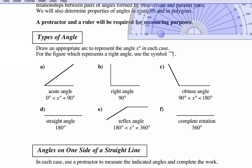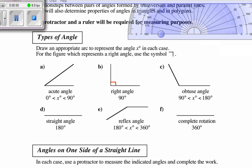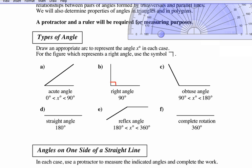There are different types of angles. An acute angle is less than 90 degrees — x is between 0 and 90. A right angle is exactly 90 degrees. An obtuse angle is between 90 and 180. A straight angle is 180 degrees. A reflex angle is between 180 and 360, and a complete rotation is 360 degrees.